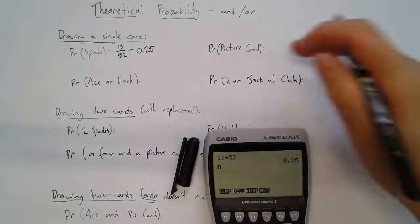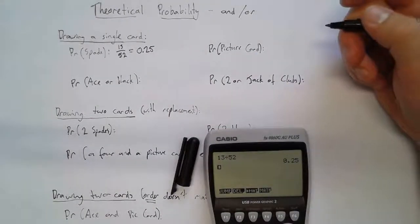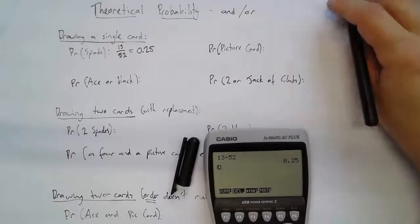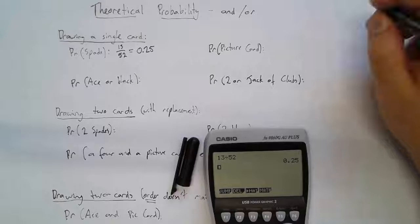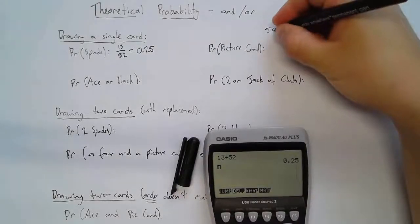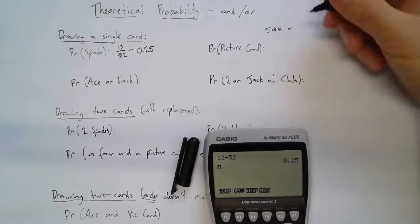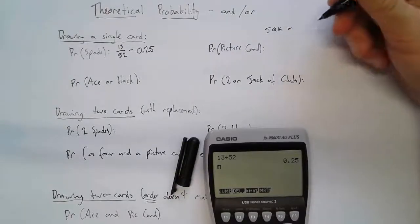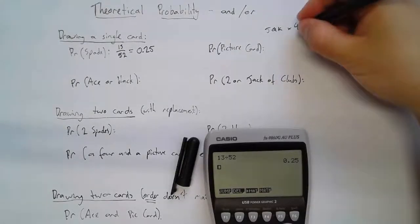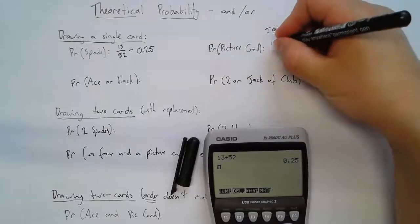Probability of there being a picture card — a picture card is a jack, a queen, or a king. There are hearts, diamonds, clubs, and spades, so there are four lots of them, making 12 all up. 12 out of 52 is 0.23.